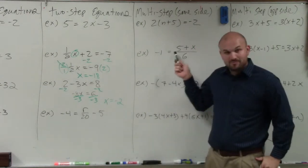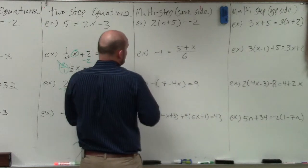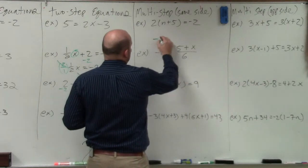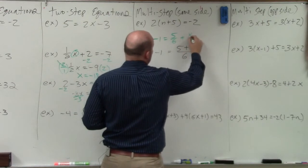First of all, this is 5 plus x divided by 6. I could also rewrite this equation as negative 1 equals 5/6 plus x over 6.